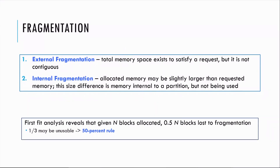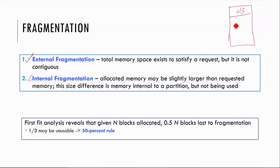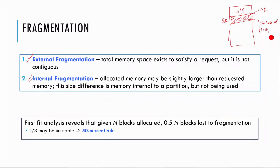When we allocate any process in memory, two types of fragmentation occur. The first is internal fragmentation. Suppose you have an 8K partition and a 6K process comes in — the process occupies up to a certain location and some space within that partition remains unused. This unused space inside the partition is called internal fragmentation because it is internal to that partition.